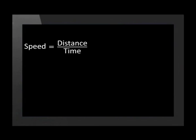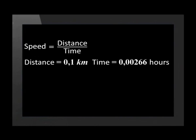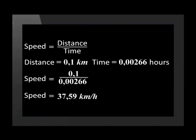Now that the units have been converted, we can calculate the speed in kilometers per hour. Remember that speed equals distance divided by time. Distance is equal to 0.1 kilometers and time is equal to 0.00266 hours. The speed of the record holder equals 0.1 divided by 0.00266, which is equal to 37.59 kilometers per hour, rounded off to 2 decimal places.